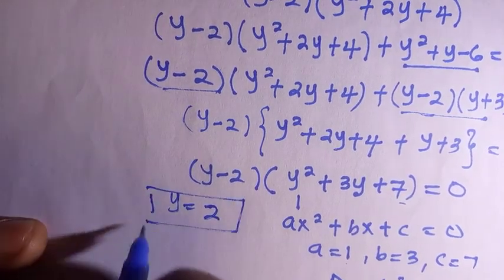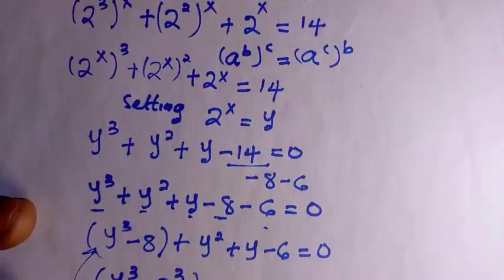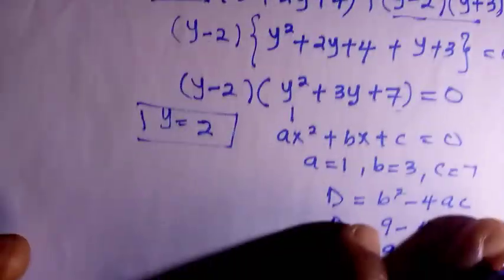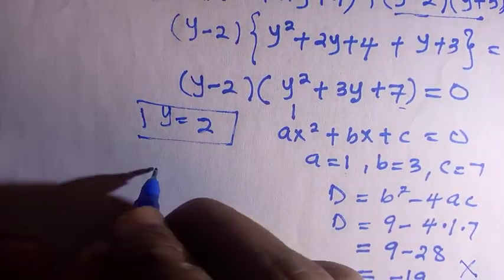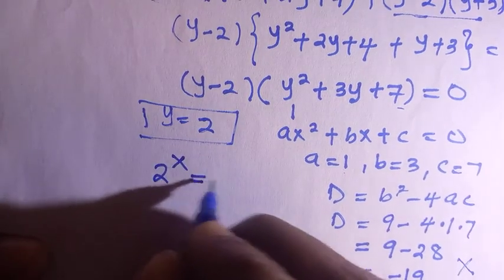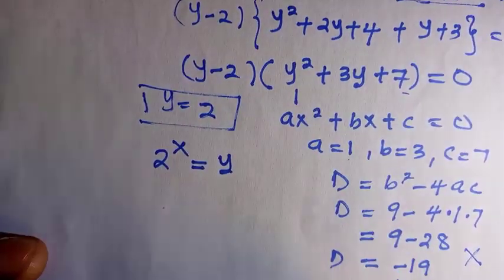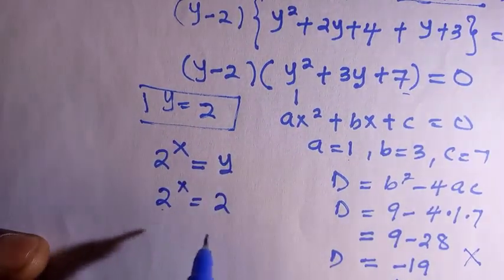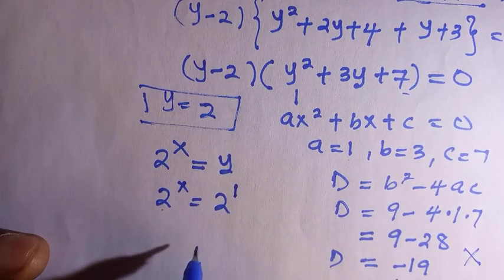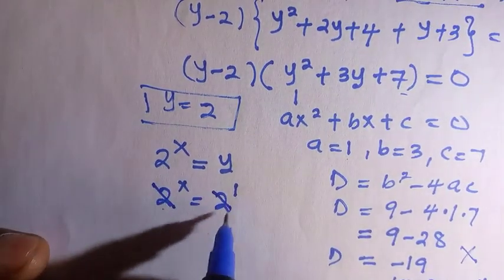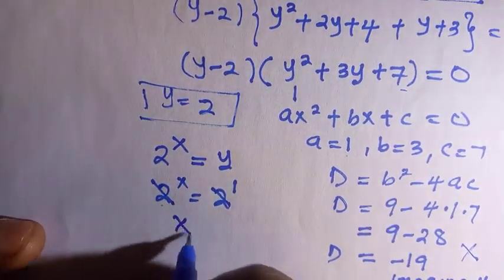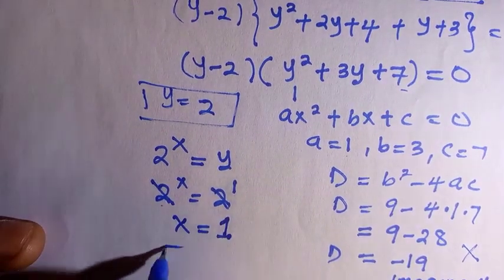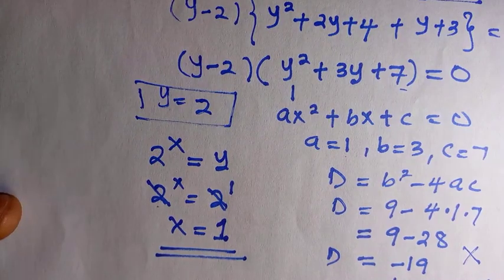So we deal with the factor y minus 2, which gives y equals 2. Recalling that we set 2 to the power of x equal to y, and y equals 2, we have 2 to the power of x equals 2, which is the same as 2 to the power of 1. Cancelling gives x equals 1.